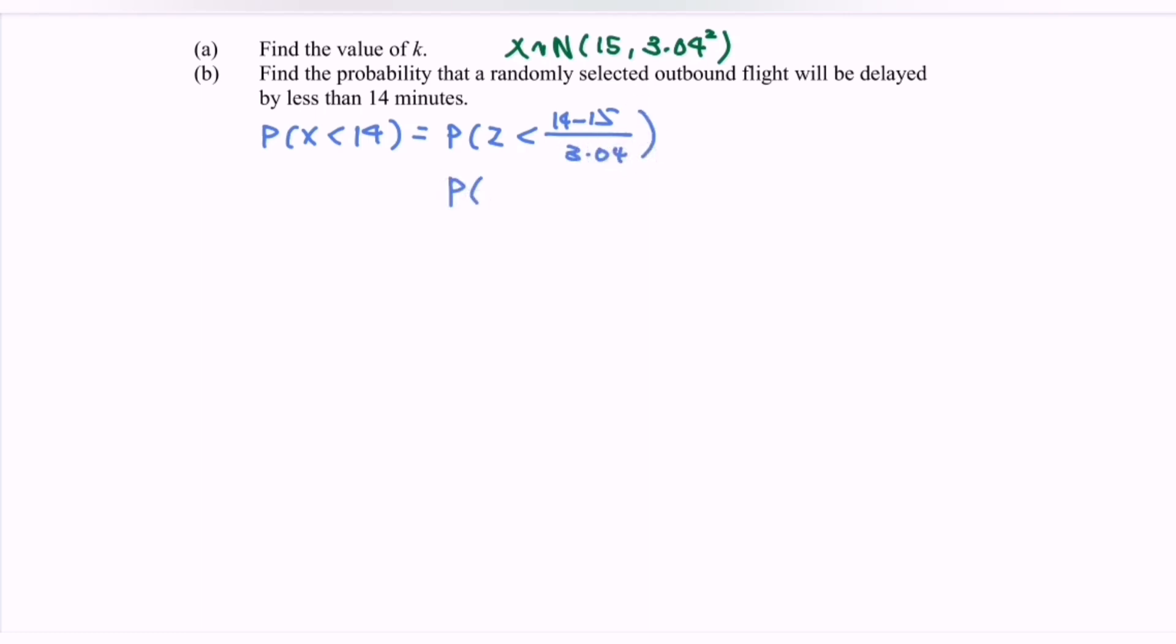Simplify, so we have z less than negative 0.33. Refer to the diagram, we have z equals negative 0.33, shade the region. What we have to do is reflect the situation. So z becomes positive 0.33, shade the region. From here, we write the formula: z greater than 0.33.